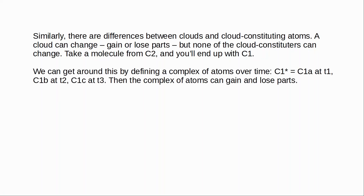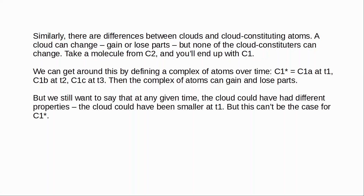We might try to get around this by looking at a complex of atoms over time — defining the complex not just at a given time but at several times. So we might take C1* to be a changing complex of atoms associated with a cloud, defined as C1a at T1, C1b at T2, C1c at T3, and so on. In that case the complex of atoms can gain and lose parts and change over time. But notice we would still want to say things like the cloud could have been half the size it was — at any given time the cloud could have had different properties than it actually had. But C1* couldn't. If you take C1a and remove some atoms, you don't have C1a anymore, and you don't have C1*. Changing the complex of atoms would give us a different complex of atoms.